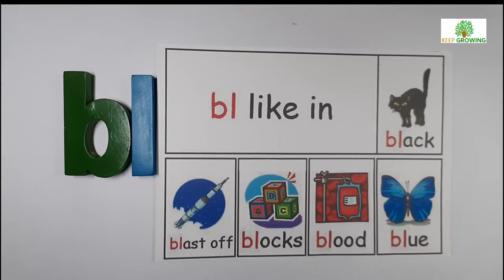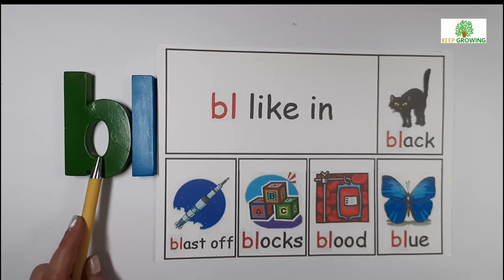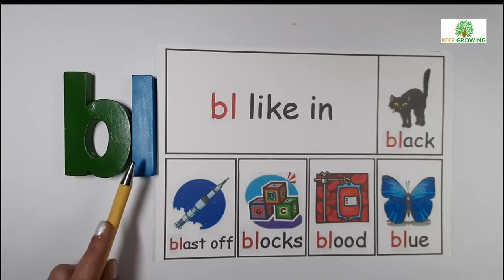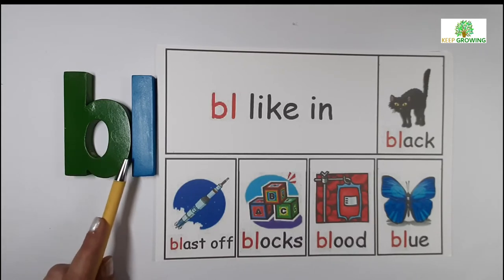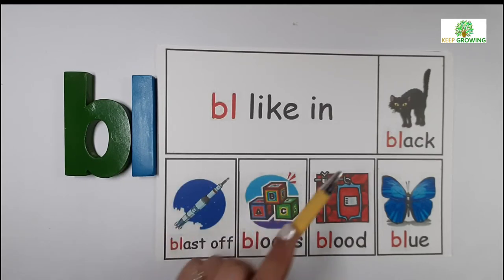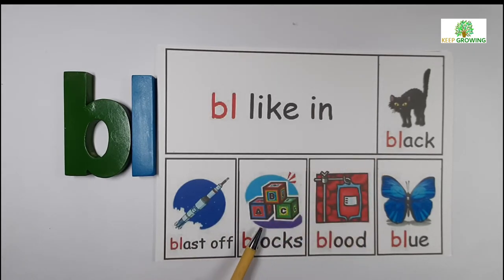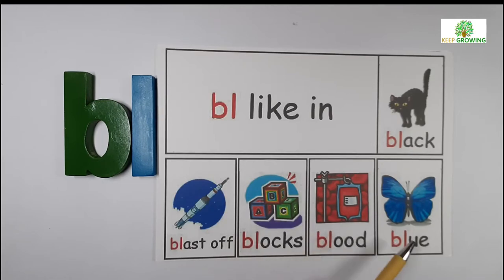Hi everyone, today we are going to learn how to read the blend of two consonants. The first blend is BL. B sounds B and L sounds L. It gives a sound BL. For example: black, blast, blocks, blood, blue.